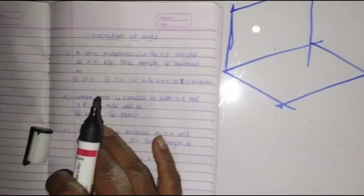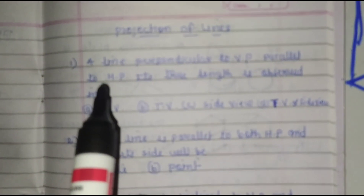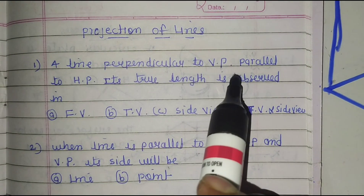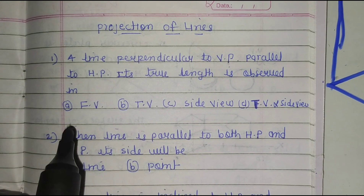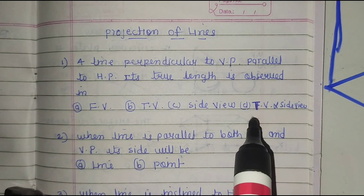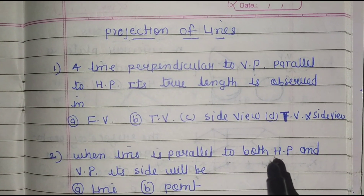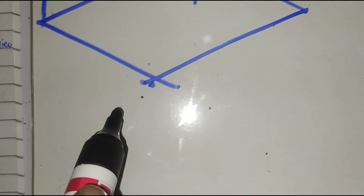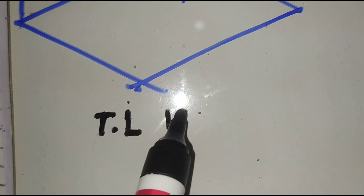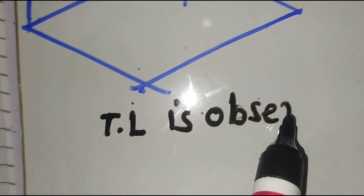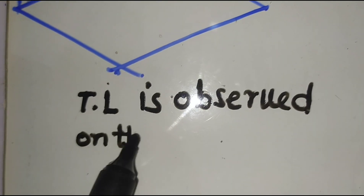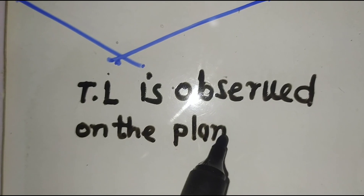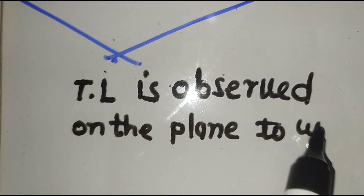The first question is: a line perpendicular to VP and parallel to HP — its true length is observed in which view? The options are front view, top view, side view, and top view and side view. The rule is that the true length is observed on the plane to which the line is parallel.